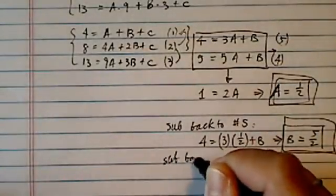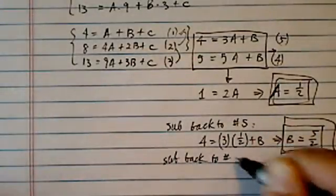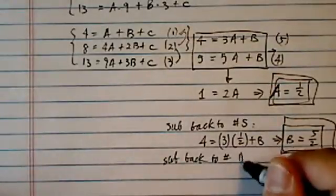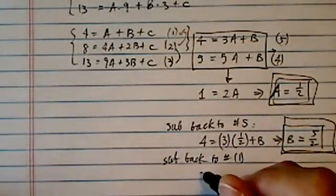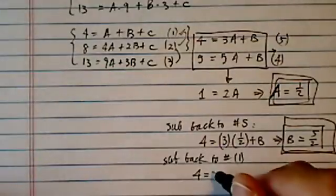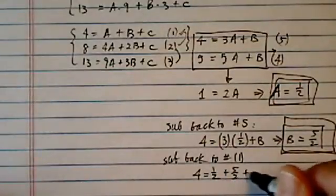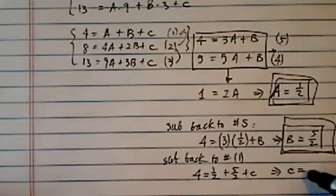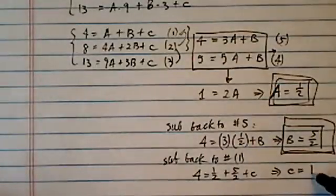Now let's sub back to, let's say, equation what? Number 1. That looks good. And then I have 4 is equal to a, which is half, plus b, plus c, and then that gives me c is equal to 1.